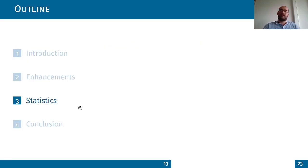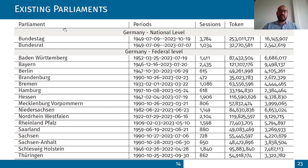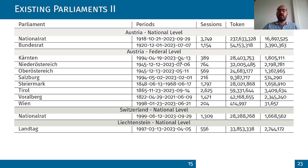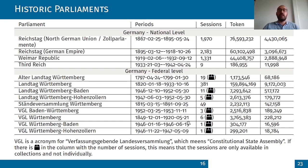Now I will show you our statistics. As you can see, we have the parliaments listed here with their periods at the national and federal level across different periods, the number of sessions, the number of tokens, and the number of sentences. The new additions include the Austrian federal and national levels, Switzerland at the national level, and Liechtenstein at the national level. The new German federal level is also included. It is important to note that we have the Bundesrat, which means the Council of States Assembly — sessions are only available in collections and not individually, as they are not provided individually.